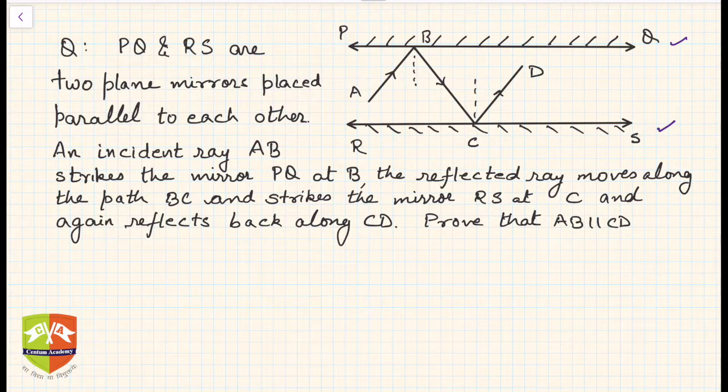Ray BC goes and strikes the mirror RS and gets reflected as CD. We have to prove that AB is parallel to CD. The incident ray AB is parallel to the double reflected ray CD.